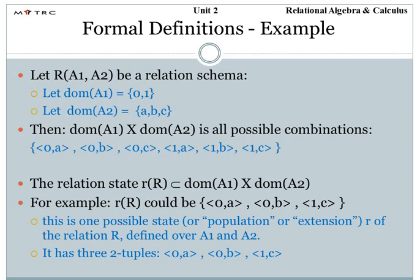If I take a simple example to describe the concept of formal definition: let we have capital R with A1 and A2 as a relation schema. Every attribute has a domain — we have two attributes, A1 and A2. For example, the domain of A1 is {0, 1} while the domain of A2 is {A, B, C}. Then the Cartesian product, domain of A1 times domain of A2, gives all possible combinations: 0A, 0B, 0C, 1A, 1B, and 1C. This is the Cartesian product of the two domains.